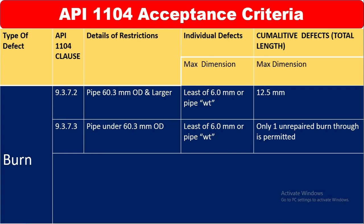Clause 9.3.7.3 covers pipe under 60.3 mm OD. That is also the least of 6 mm or pipe wall thickness — whichever is less — as the maximum individual dimension. For cumulative defects, only one unrepaired burn through is permitted for pipe under 60.3 mm OD.